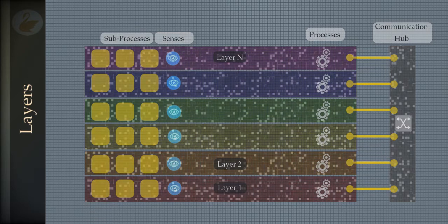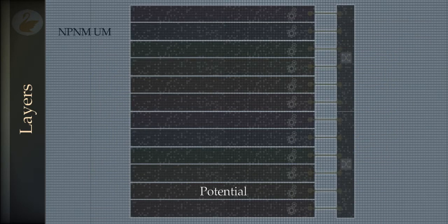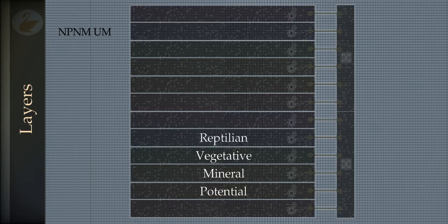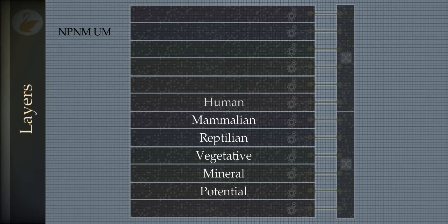We saw a typical layered structure — a case study of the layered structure as seen from a human perspective. There can be many configurations of these architectures. The variety is unlimited, but we can find certain features that are common and general among these layered structures.